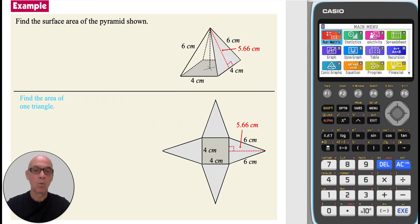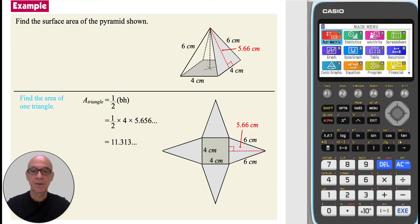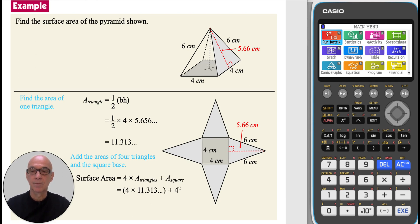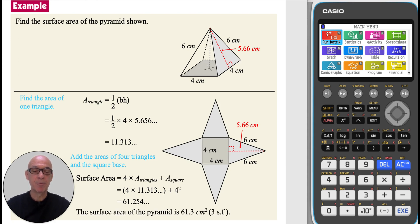Finding the area of one triangle, again using the formula one half base times perpendicular height. Performing the calculation gives the value shown. To find the surface area of the pyramid, add the areas of the four triangles and the square base. Writing and performing the calculation, remembering to use accurate values, gives the value shown. So the surface area of the pyramid is 61.3 cm², correct to three significant figures.